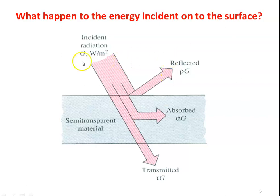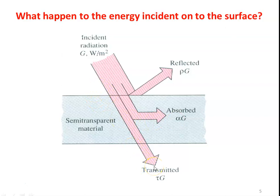Looking at the diagram, the incident radiation in watts per meter squared has three portions: some is reflected, some is absorbed, and some is transmitted. The portion reflected depends on a property called reflectivity, given as rho. The amount of energy absorbed depends on the absorptivity, alpha. The amount of heat energy transmitted depends on the transmissivity, tau. We will discuss how to calculate each of these amounts.